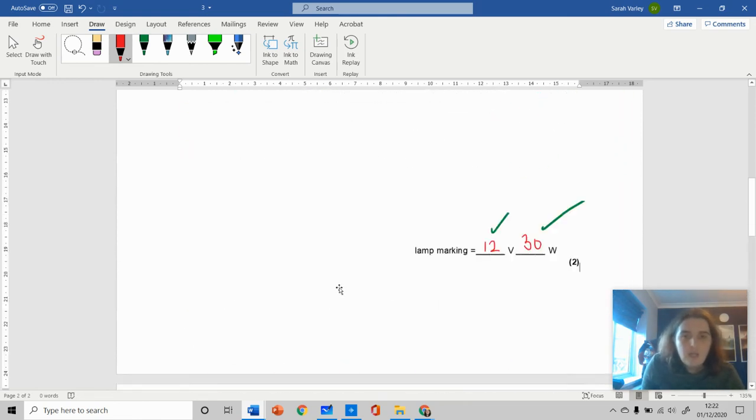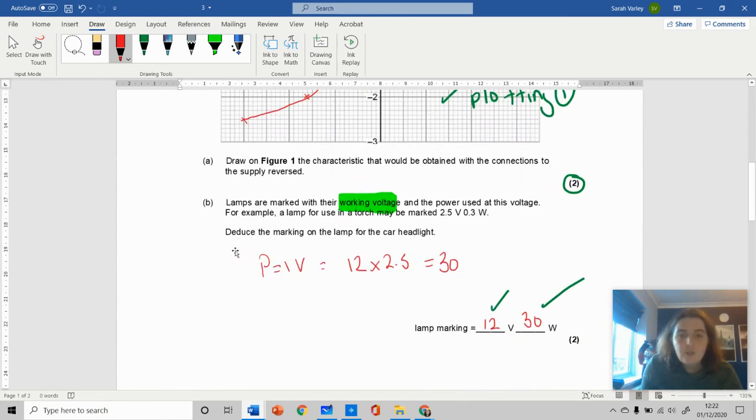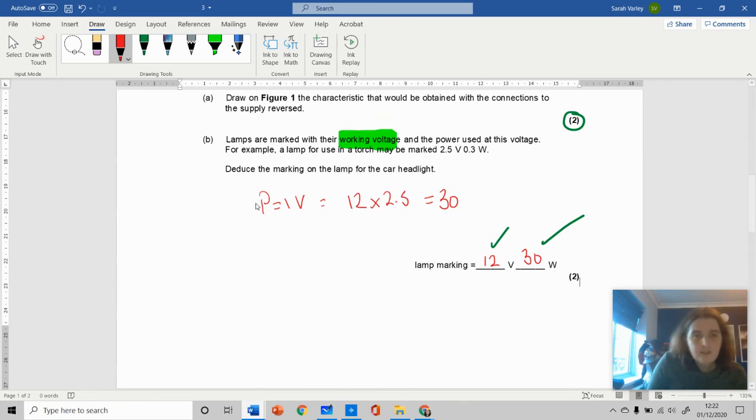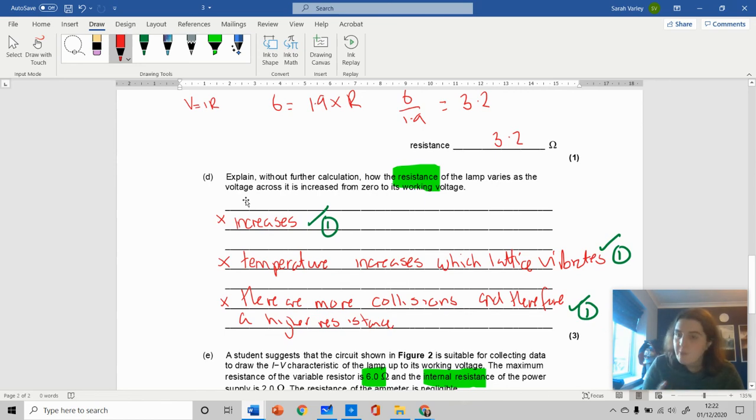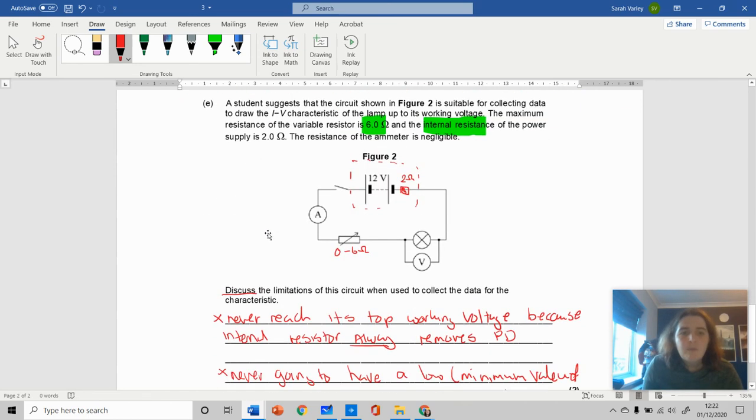I've highlighted a few things. Deduce means using the graph's information. Explain - reminding you about the 'because' idea. Discuss means looking at pros and cons, things that could be good and could be bad. Limitations means what's the maximum and minimum value that I can receive. That is day three.